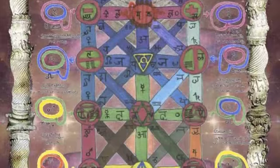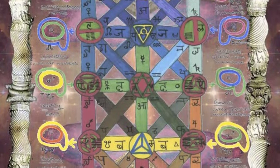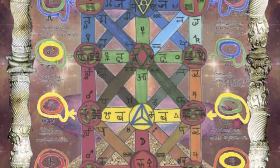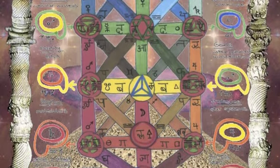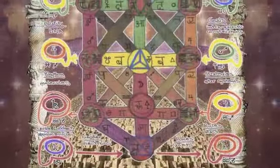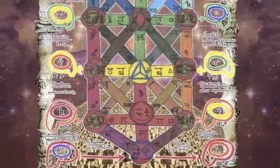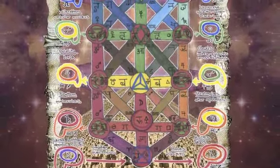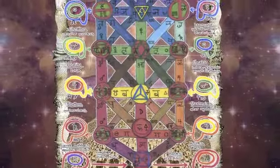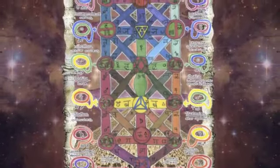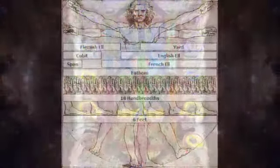One, the principle of mentalism. Two, the principle of correspondence. Three, the principle of vibration. Four, the principle of polarity. Five, the principle of rhythm. Six, the principle of cause and effect. Seven, the principle of gender.